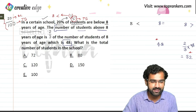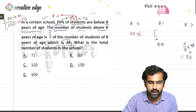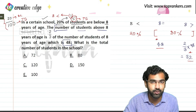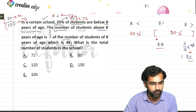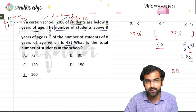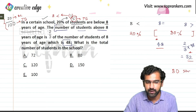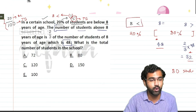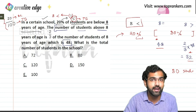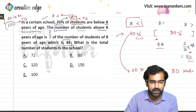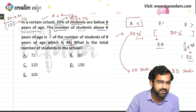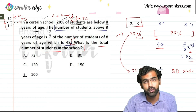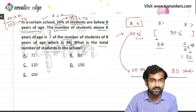Students below 8 are 20% of the total. So students who are 8 or above must be 80%. That number — 48 plus 32 — equals 80. So 80% equals 80 students. Therefore 1% equals 1 student. The students below 8 are 20%, which corresponds to 20 students. The total number of students will be 20 plus 80, which is nothing but 100.